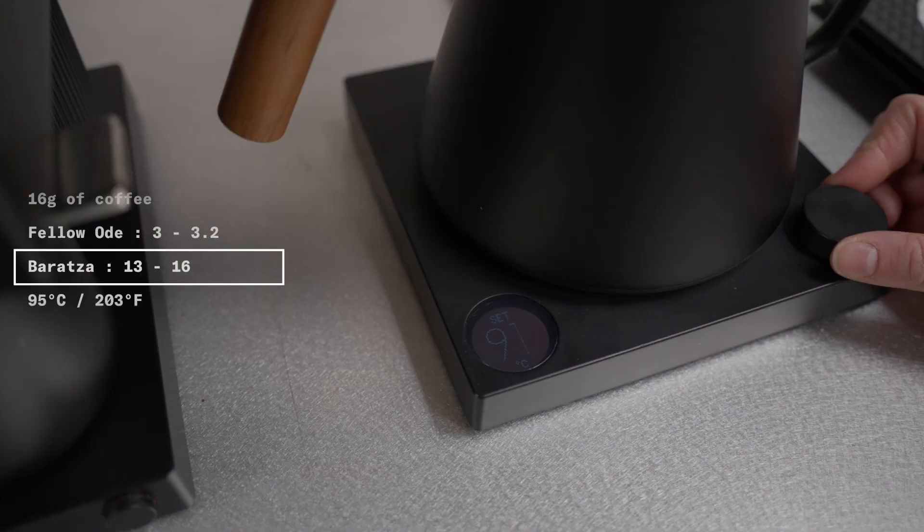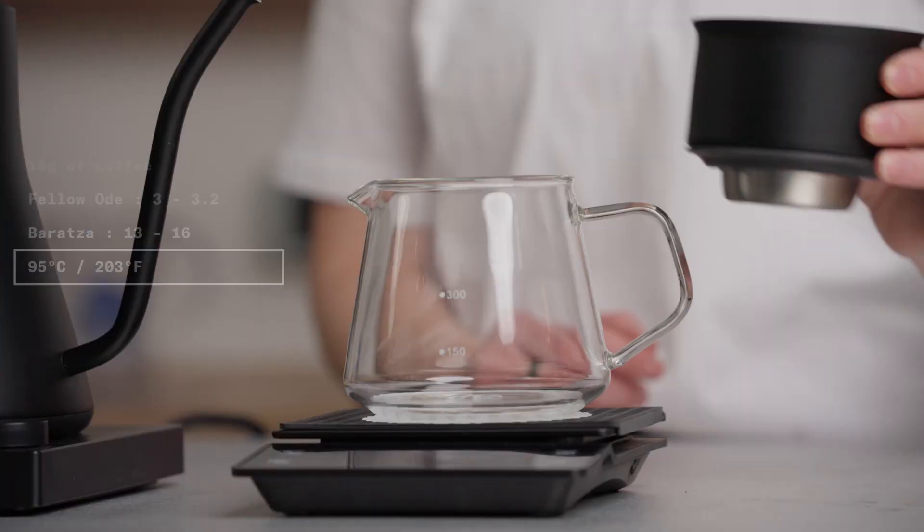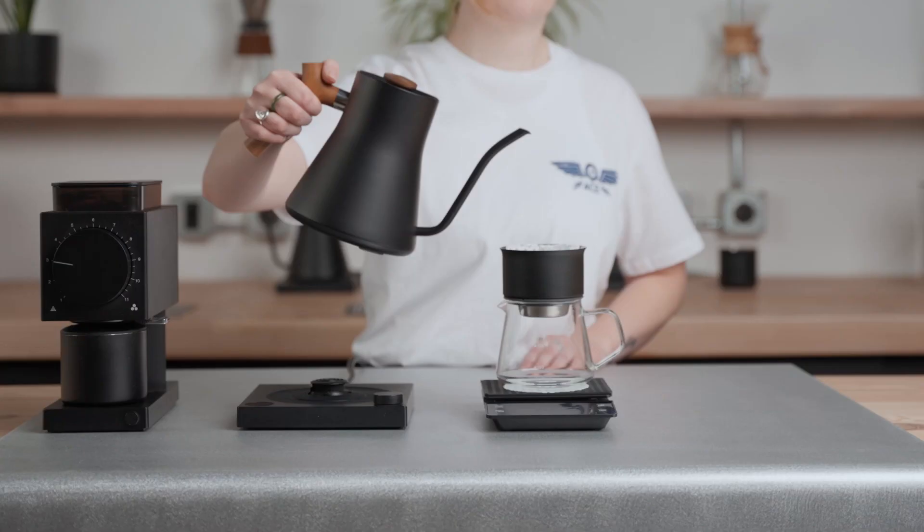We will be setting the kettle to 95 degrees Celsius. As always, we are pre-wetting the filter to increase the brewer's temperature and rinse off any impurities in the paper filter.